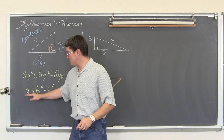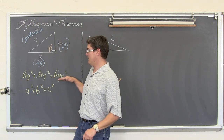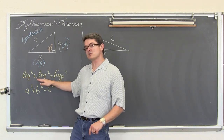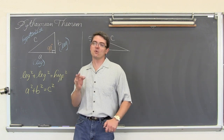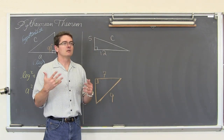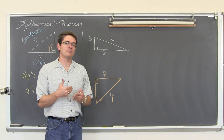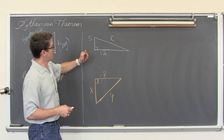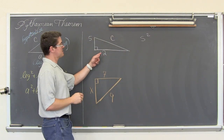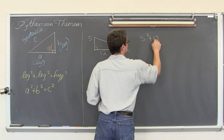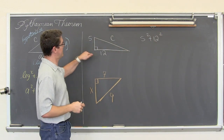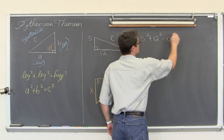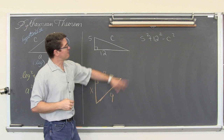The Pythagorean Theorem is a squared plus b squared equals c squared. Take a leg and square it, add it to another leg squared, and set it equal to the hypotenuse squared. So we have 5 squared plus 12 squared — the two sides that are helping to make the right angle together on the same side of the equation — equals c squared. Now, 5 squared is 25.